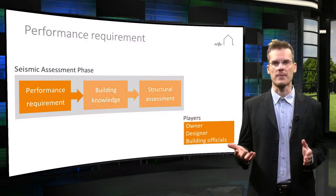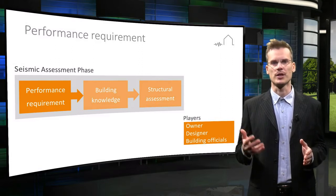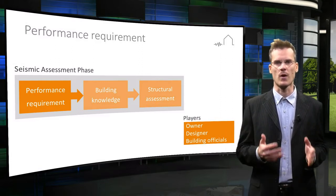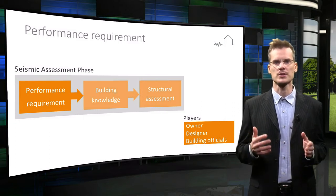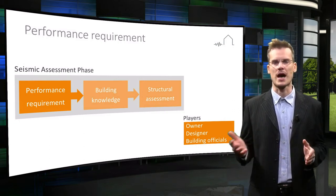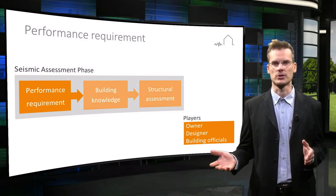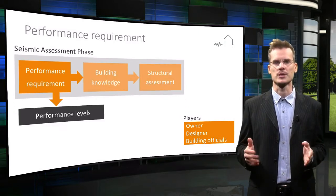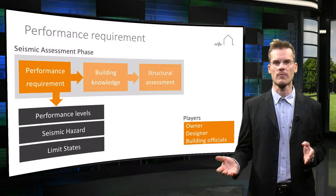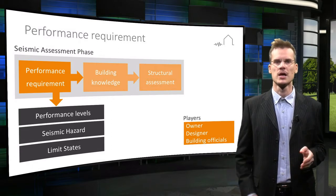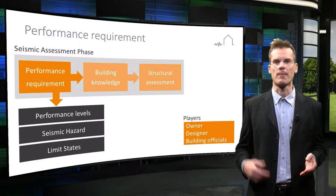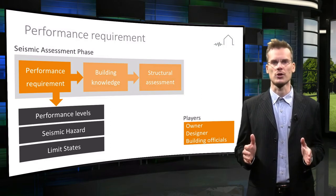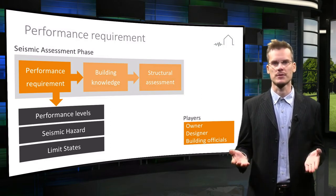In the first step, the designer, together with the building owner and the building officials if required, select the performance requirements for the building under investigation. This happens by identifying the following sub-steps: building performance level, seismic hazard, and by combining them, limit states.